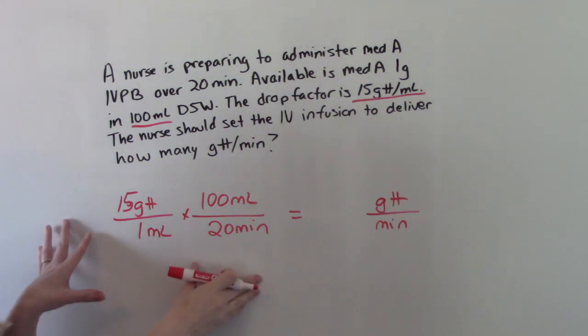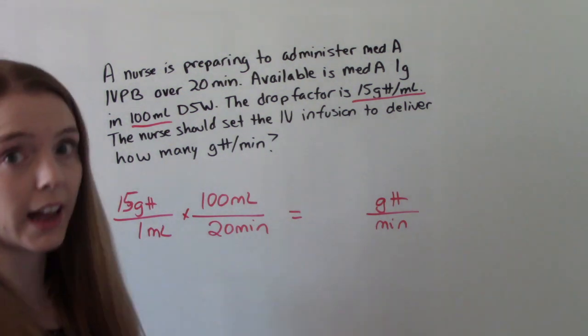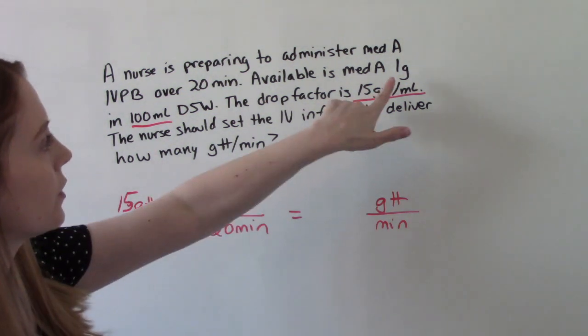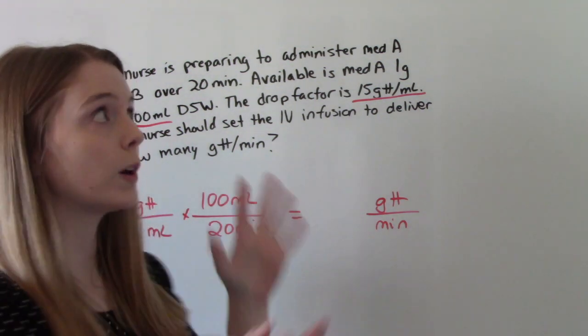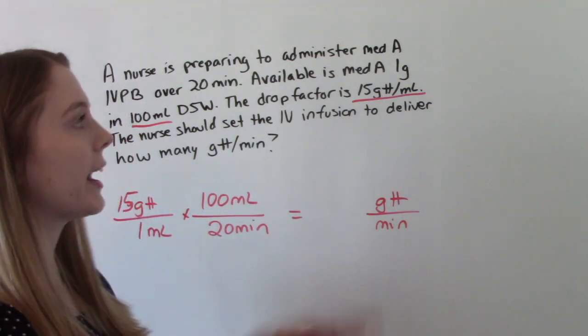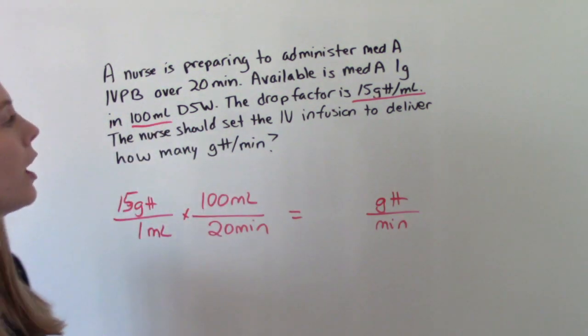And that's all we have to do to set up this equation. We don't need to do any converting because it's already in minutes and not hours. And you might be wondering, what about this 1 gram? That's not relevant to what the question is asking. Because we're not asking about the medication. We're asking about the amount. So it comes in a 100 ml bag.